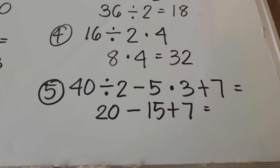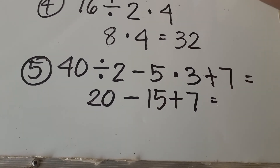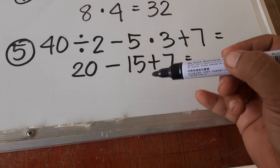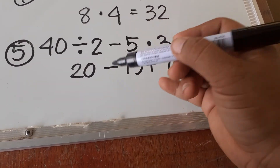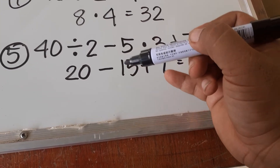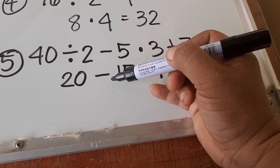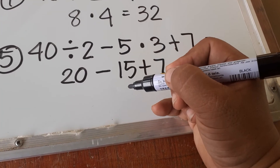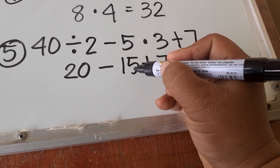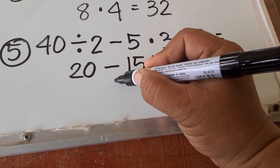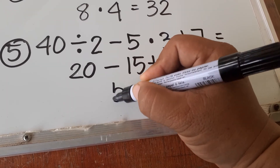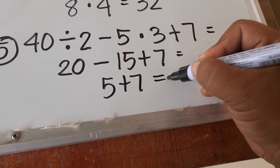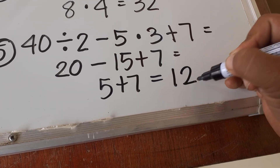Next, we handle addition and subtraction — whichever comes first. Since subtract comes first, we subtract before we add. So 20 minus 15 is equal to 5, then 5 plus 7, so the final answer is equal to 12.